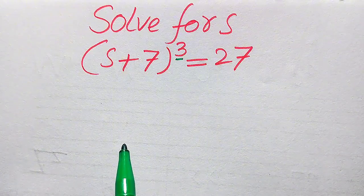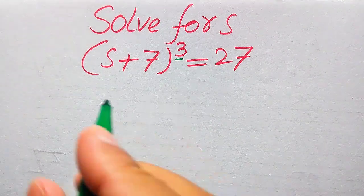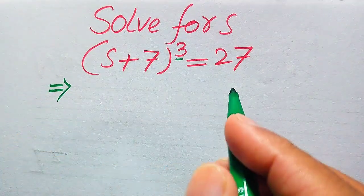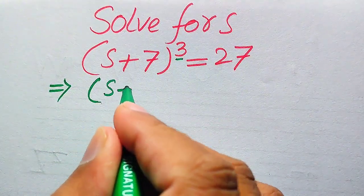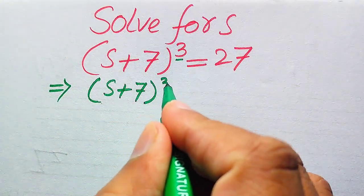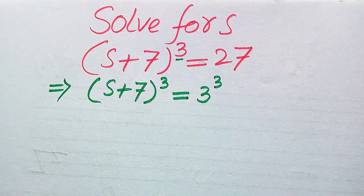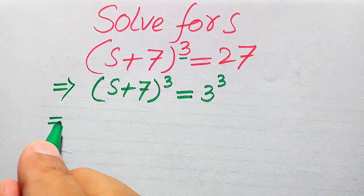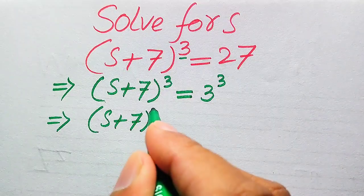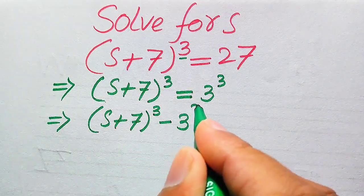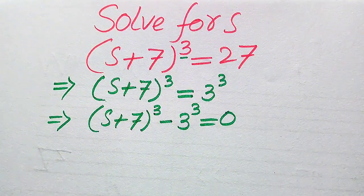To do this, we focus on the right-hand side. We have 27, and we write 27 in prime factor form — the prime factors of 27 are 3 cubed. In the next step, we move 3 cubed from the right-hand side to the left-hand side, giving us (s + 7)³ − 3³ = 0.